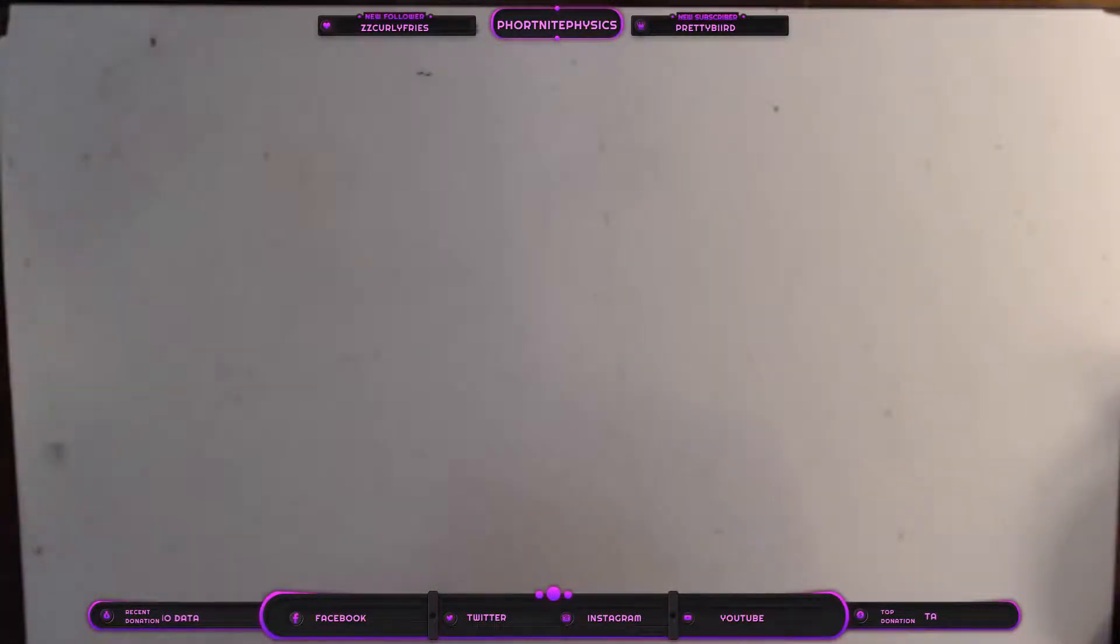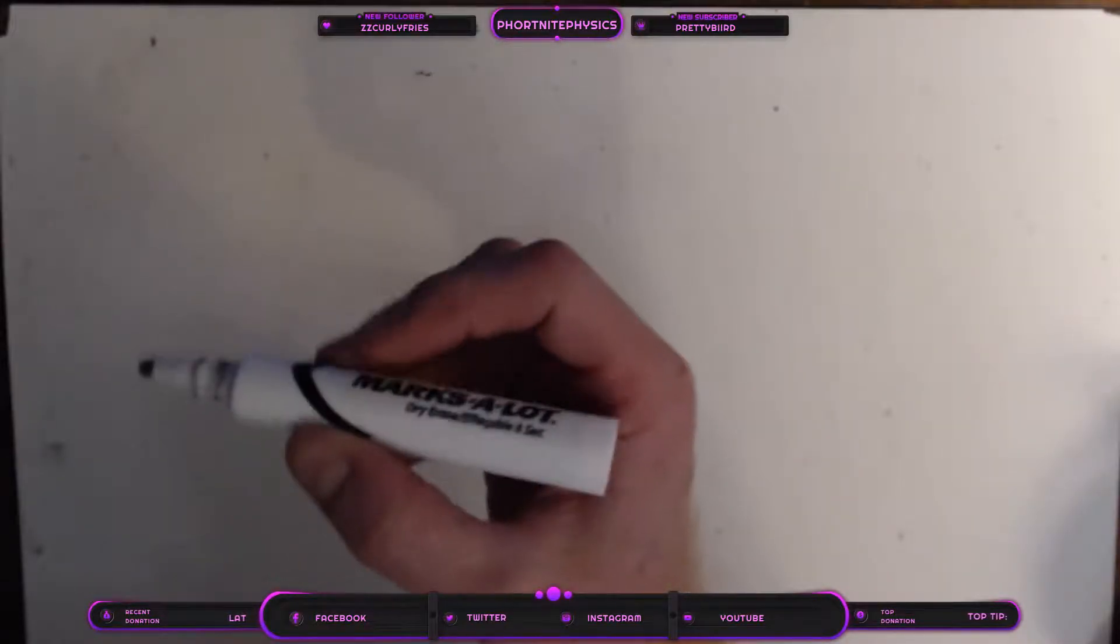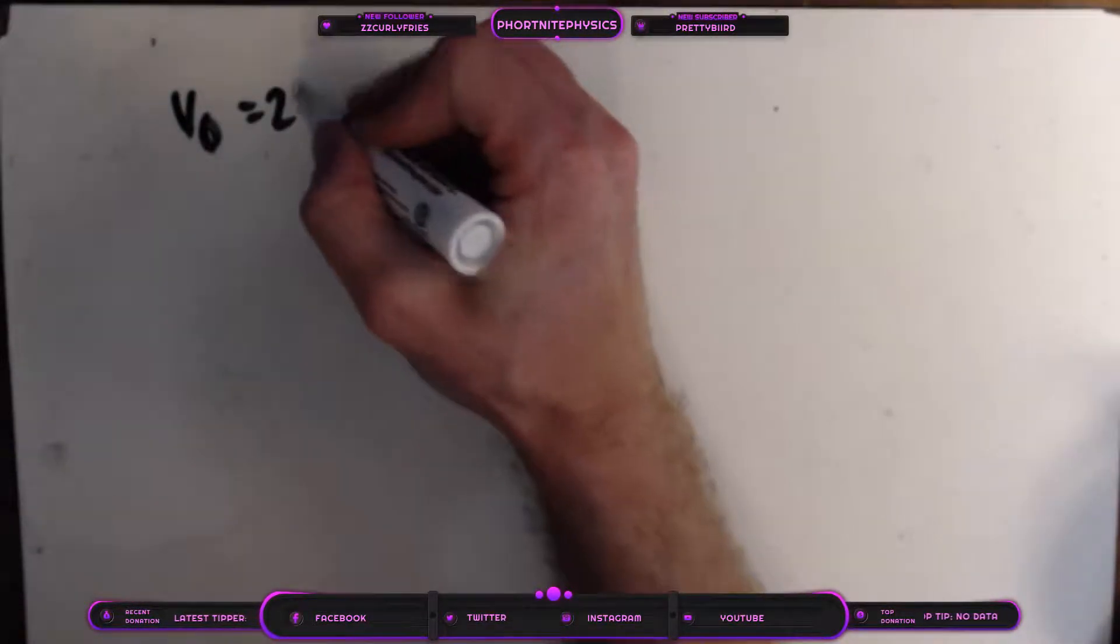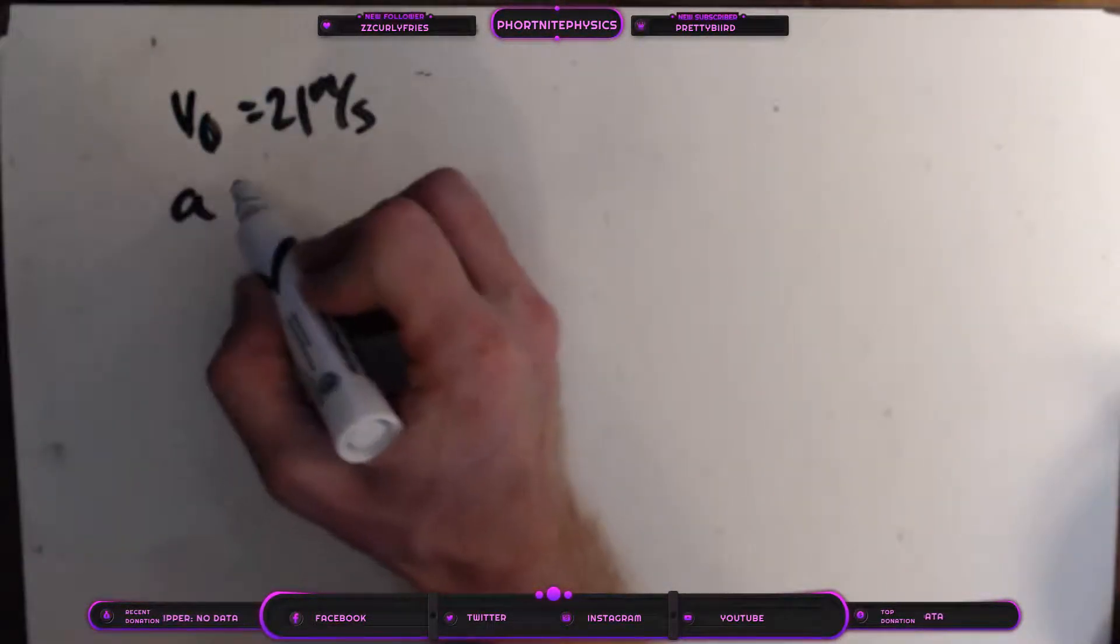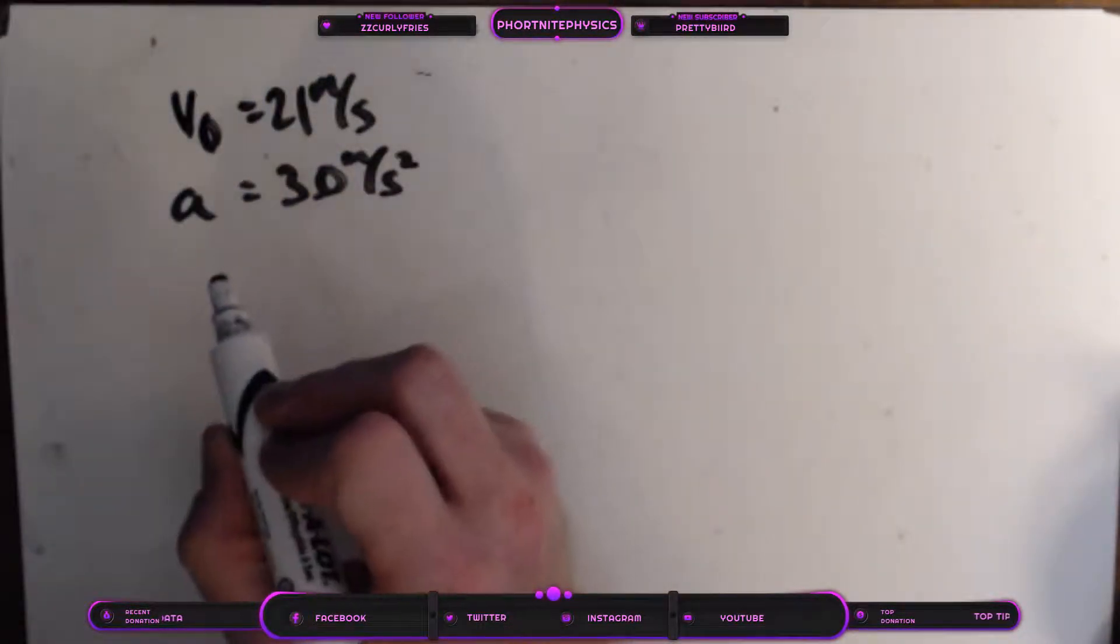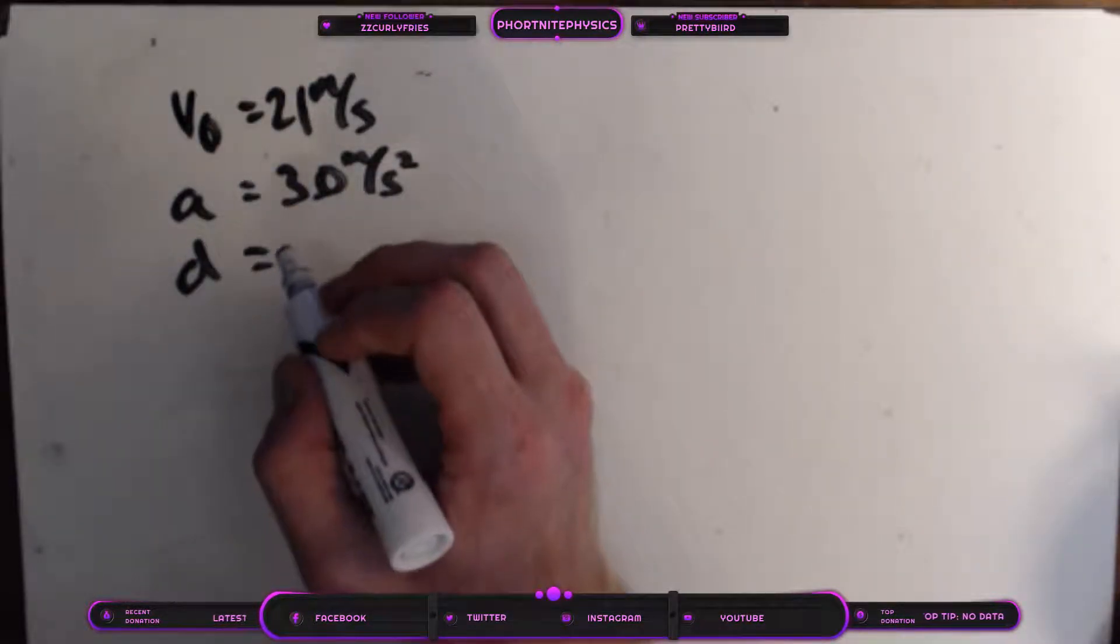Let's go ahead and do that one. So an airplane accelerates from a velocity, our initial velocity is 21 meters per second, and a constant rate, our acceleration is 3 meters per second squared, over a distance of 535 suvath.